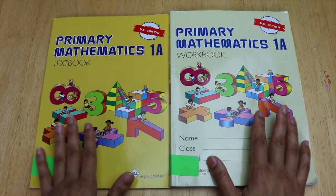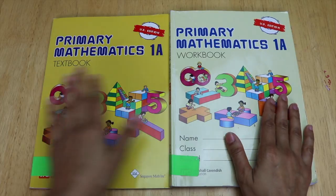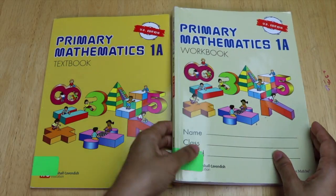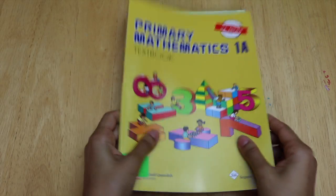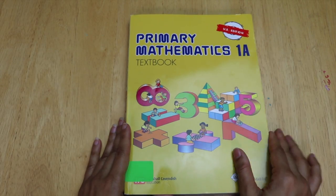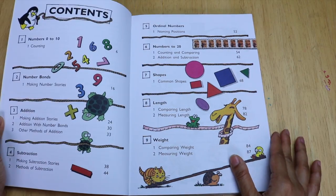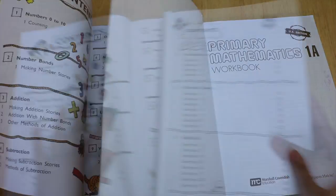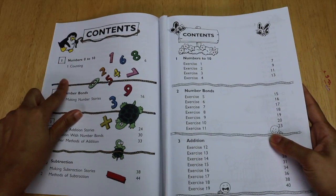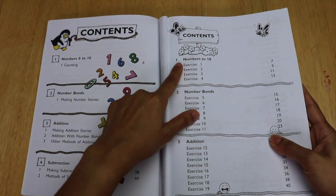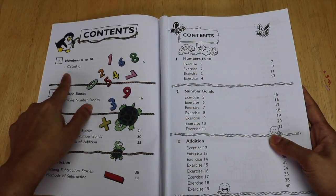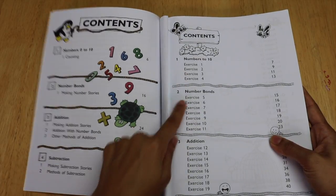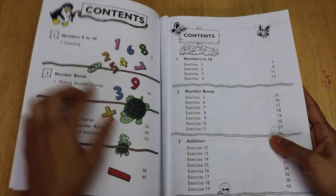Singapore math, the way it works is it has a workbook and a textbook. We started off using the US editions and I'm really quite happy with them. The textbook is very colorful. It starts off with a table of contents here which aligns with the table of contents in the workbook. So if you look at the table of contents in the textbook and the table of contents in the workbook, they'll both have the same titles. So numbers 0 to 10, number bonds, addition, and so on and so forth.